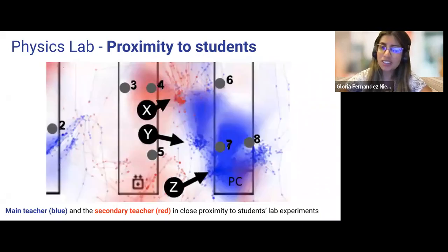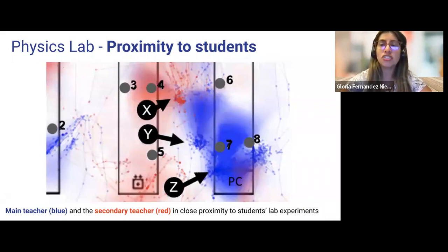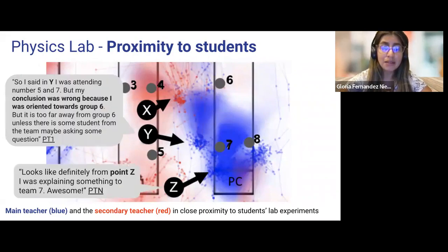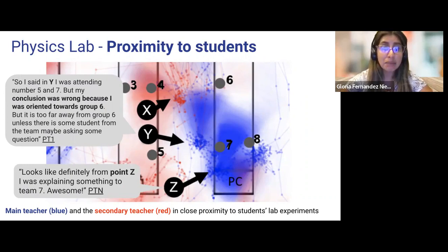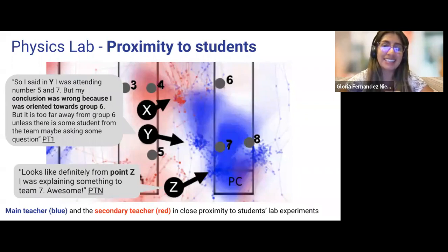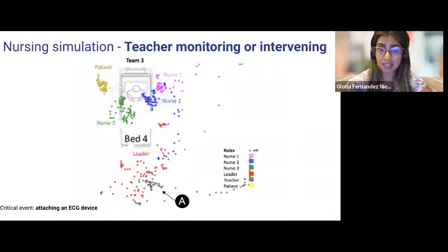When teachers explore the classroom dandelion, they change how they initially interpret the data. T1 indicated that his conclusion was wrong because he was oriented towards group six, and by indicating point Z, he interpreted that he was finally explaining something to team seven.